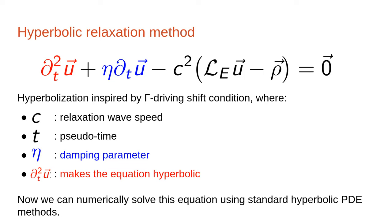After it has relaxed, the spatial convergence is between ninth and tenth order — using tenth order finite differences. Someone asked about the damping parameter — it is a constant.